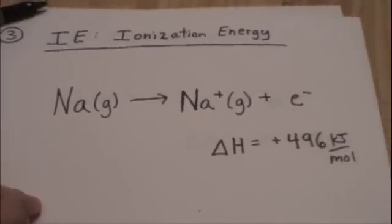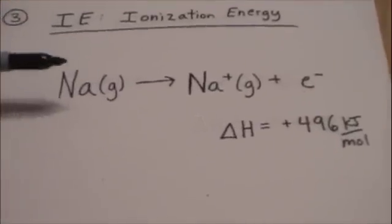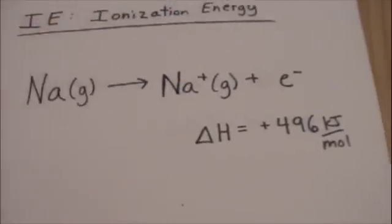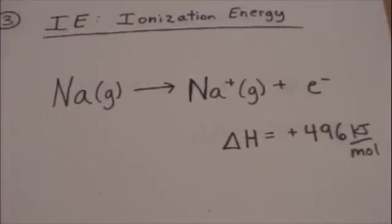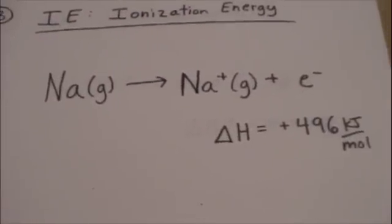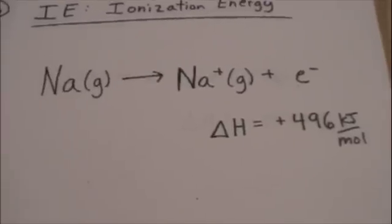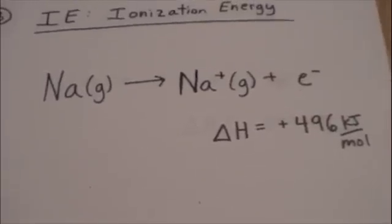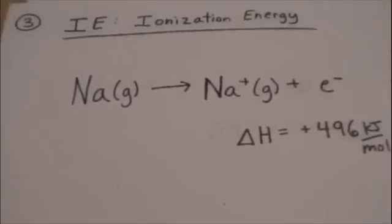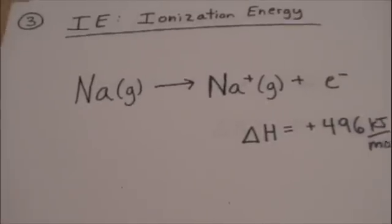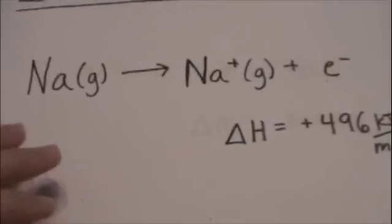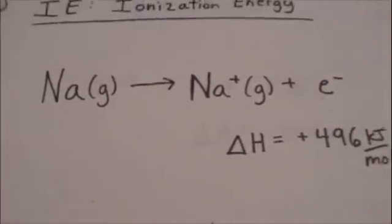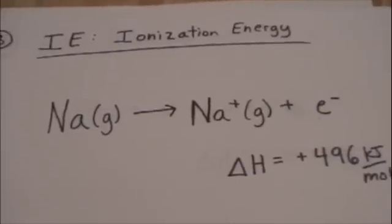But that's ionization energy, just the energy required to remove the electron. This one is just going to form the Na+, because it's in group 1A. So it only has one electron to remove to become pretty stable. But if you had something like an alkaline earth metal, you're going to have a first ionization energy and then a second ionization energy. And that second one's going to be a lot harder to pull off than the first electron.